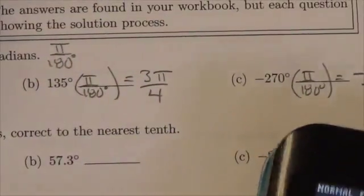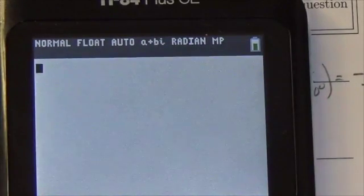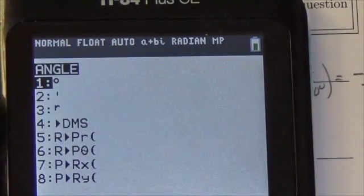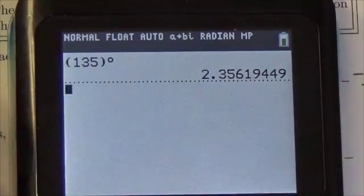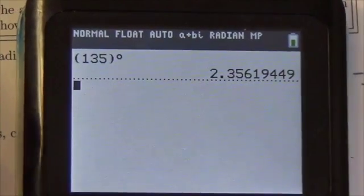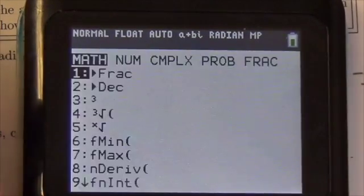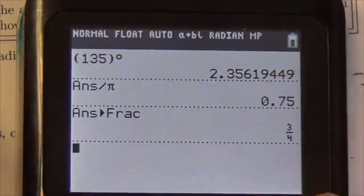Let's go back and try this one. 135. Put brackets here. 135. I'm going to go into my angle menu, tell the calculator that what I've just entered is a degree. Press enter. There's my decimal value. That is my radian measure. But I'm going to divide out the π, convert what I have left to a fraction, and put the π back in. 3π over 4.